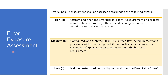Next is error exposure assessment, assessed according to the following criteria. If the software function can be customized — meaning there is a code change to create functionality that is not available — then the error risk shall be considered as high. If the software function cannot be customized but can be configured — meaning the functionality is created by setting up application parameters to meet the business requirement — then the error risk shall be considered as medium. If the software function is neither customized nor configured, then error risk shall be considered as low.